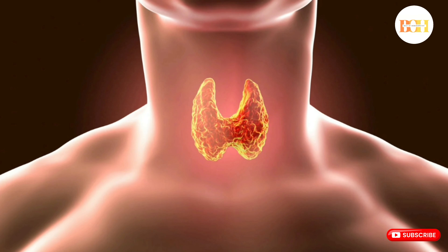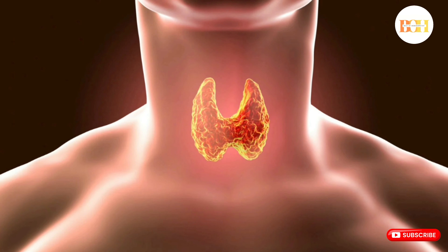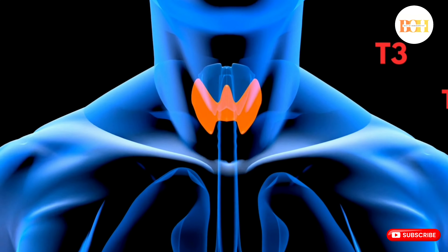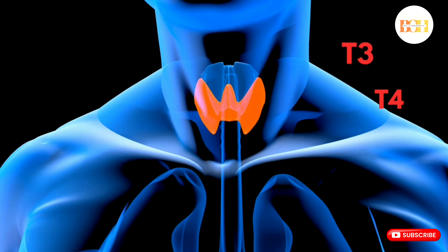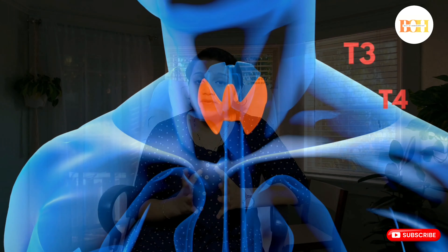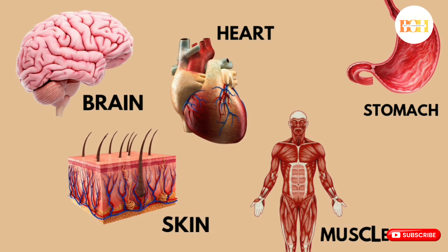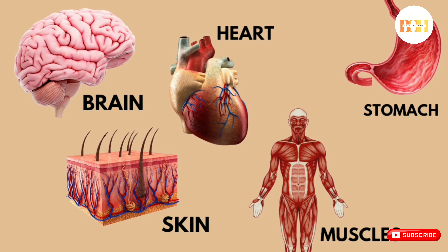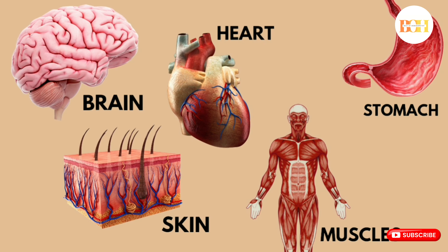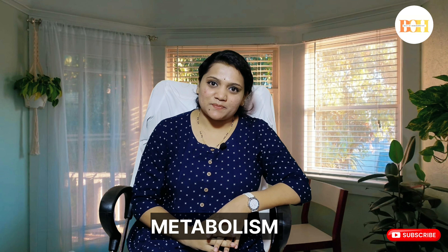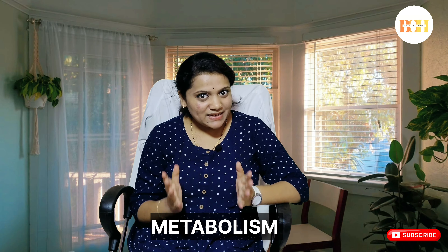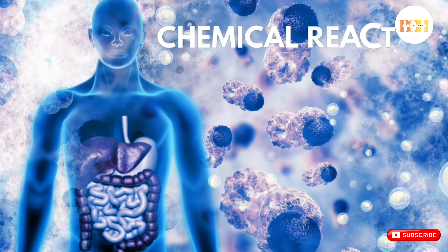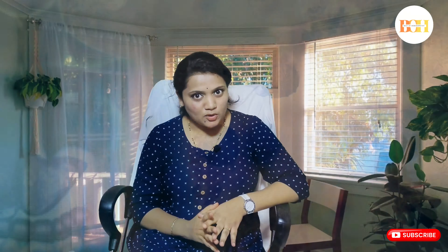Thyroid is a small butterfly-shaped gland which is present in your throat. The two hormones it produces, T3 and T4, control almost every organ and function of your body, including your brain, heart, stomach, skin, muscles, and most importantly, the metabolism. To explain in simple terms, metabolism is a chemical reaction which takes place in every cell of your body.